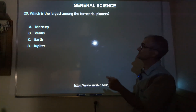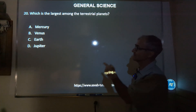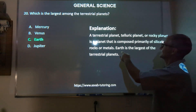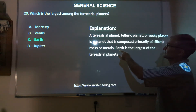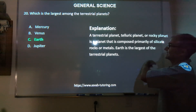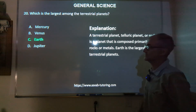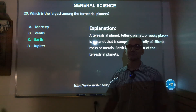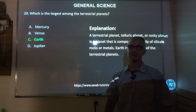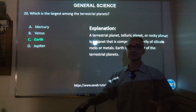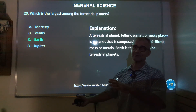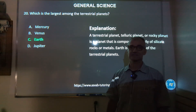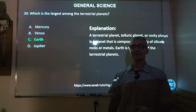Last one, number 20: which is the largest among the terrestrial planets? Mercury, Venus, Earth, or Jupiter? Correct answer is Earth. A terrestrial — or telluric — planet is a planet composed primarily of silicates, rocks, or metals. Earth is the largest of the terrestrial planets. Well, I sure hope that was helpful. This is an overview of some of the problems you might encounter on the science portion of the ASVAB. The best way to study is to really study science vocabulary — we covered earth science, chemistry, and physics, but it's a general overview of your knowledge of science and vocabulary. Thank you for watching.